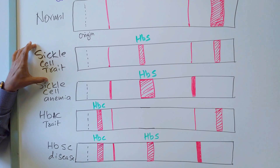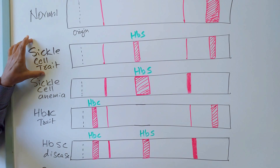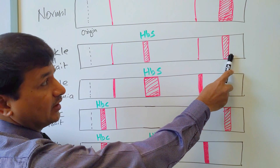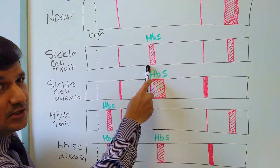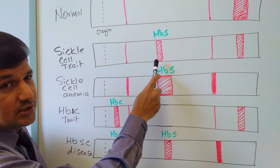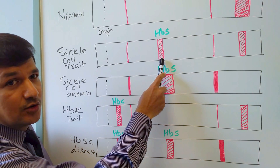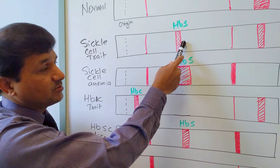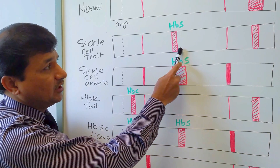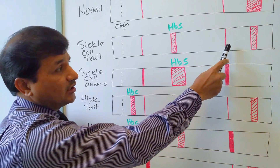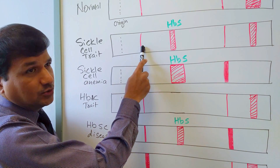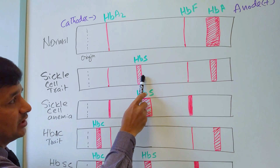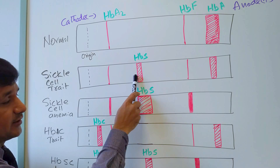In sickle cell trait, one beta globin is normal and moves all the way towards the anode, whereas the other beta globin is of the sickle type — at the sixth position, glutamate is replaced by valine. Glutamate has a negative charge, and without it, this HbS type stops in the middle. There is no significant change in fetal hemoglobin and HbA2 in sickle cell trait.